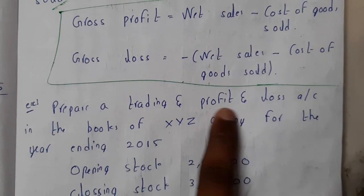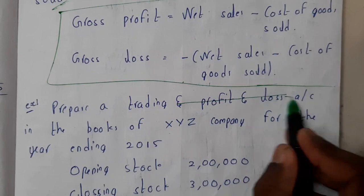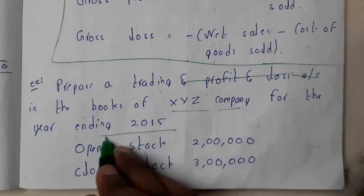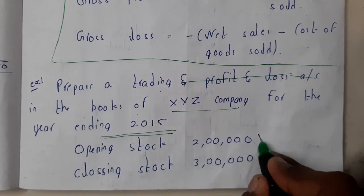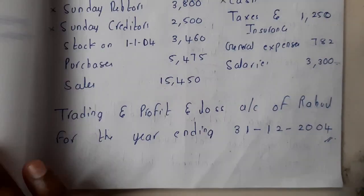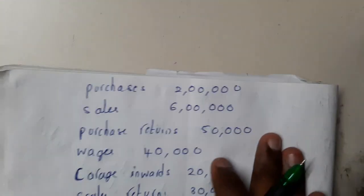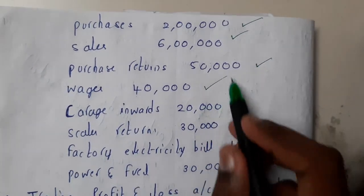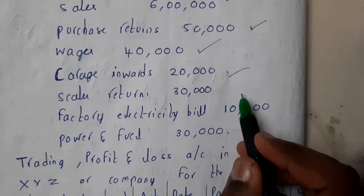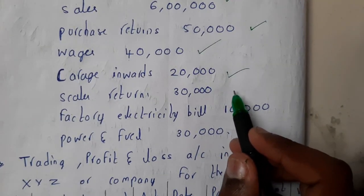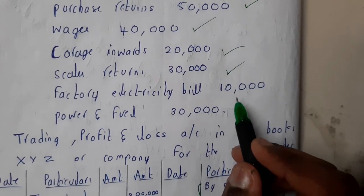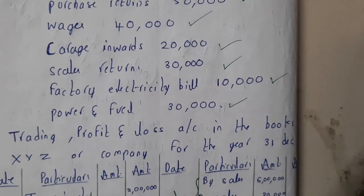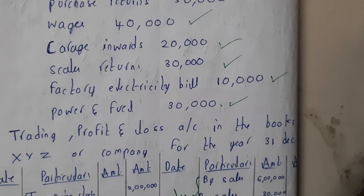The given problem: Prepare a trading account in the books of XYZ Company for the year 2015. The data given is — opening stock: 2 lakhs, closing stock: 3 lakhs, purchases: 2 lakhs, sales: 6 lakhs, purchase returns: 50,000, wages: 40,000, carriage inwards: 20,000, sales returns: 30,000, factory electrical bills: 10,000, and power and fuel: 30,000.